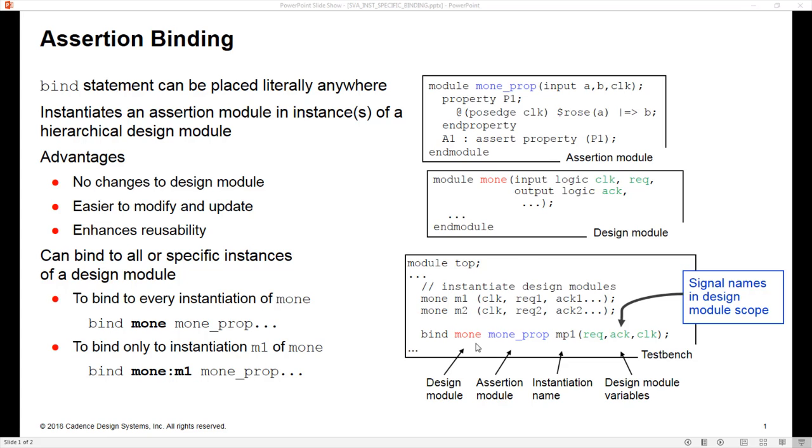Now with that bind statement there what we're doing is we're binding to all instances of module M1 however many there are anywhere in our design. We may not wish to do this however, it might not be convenient or we wish to reduce the overhead on the simulator or whatever tool we're using or only interested in one particular channel in a host of channels. The way in which we can do that is with instance based assertion binding and here's one example.